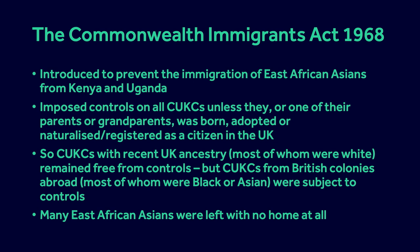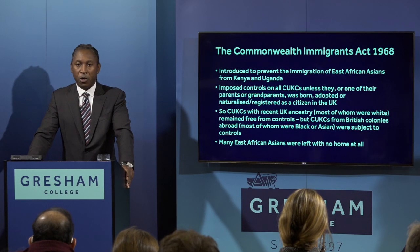Controls were now imposed on any CUKC, unless they or one of their parents or grandparents was born, adopted, naturalised or registered as a citizen of the United Kingdom. CUKCs with recent UK ancestry — most of whom were white — remained free from immigration control, while CUKCs from British colonies — most of whom were Black and Asian — were subject to controls. The immediate impact was that East African Asians, unable to return to Kenya or Uganda and unable to settle in Britain, were left with no home at all.